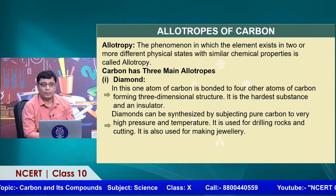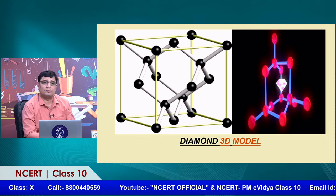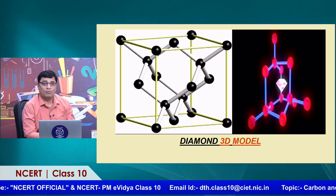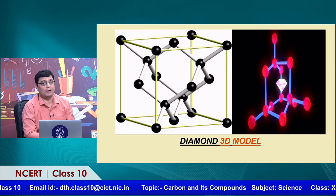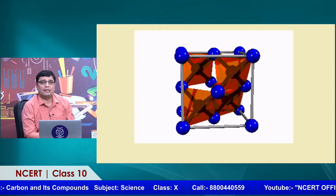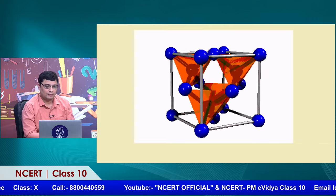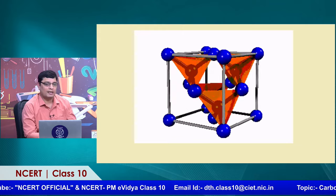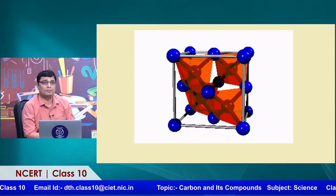Diamond can be synthesized by subjecting pure carbon to very high pressure and temperature. It is used for drilling rocks, cutting, and making jewelry. In the diamond structure, carbon atoms are totally packed — each carbon atom makes four bonds, with no free electrons between carbon-to-carbon atoms, making the carbon-carbon bonds very strong and the melting point very high. One central carbon atom is attached to four different carbon atoms, forming four pure covalent bonds — that is why diamond becomes the hardest substance.